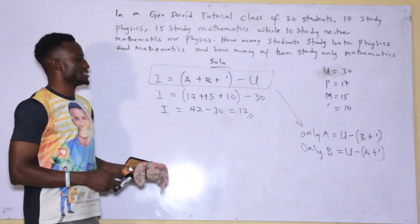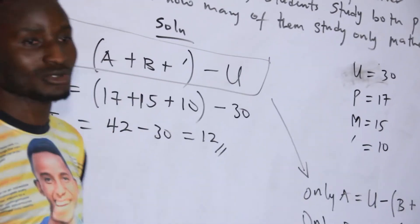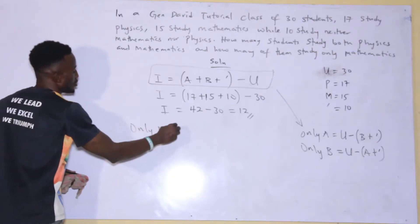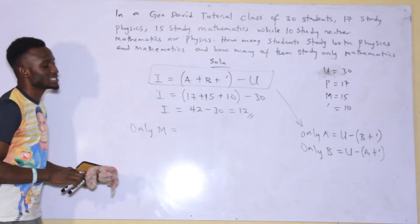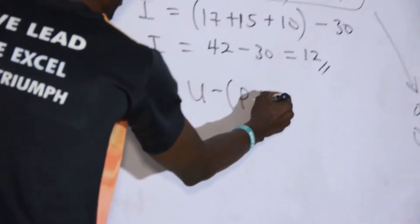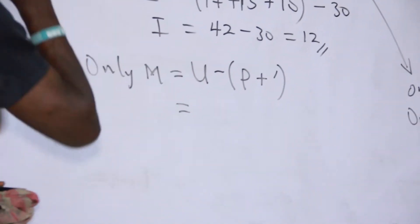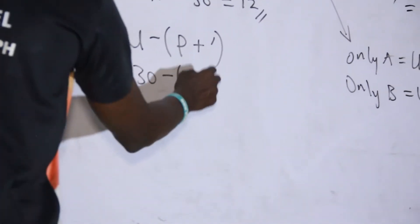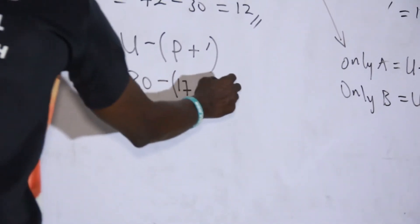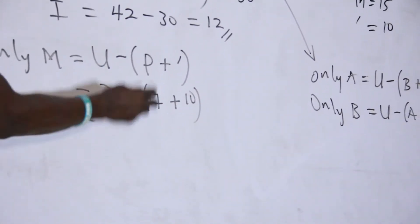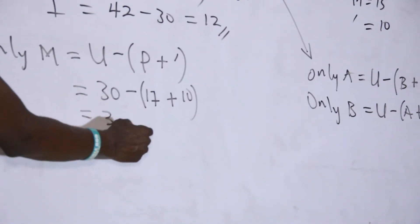So that means, since they ask for only mathematics, only mathematics will now be universal set minus the second subject, which is physics, plus the complement. Only mathematics equals: the universal set is 30, minus those that study physics which is 17, plus the complement which is 10. If you open this, this should equal 30 minus 27, and the answer is 3.